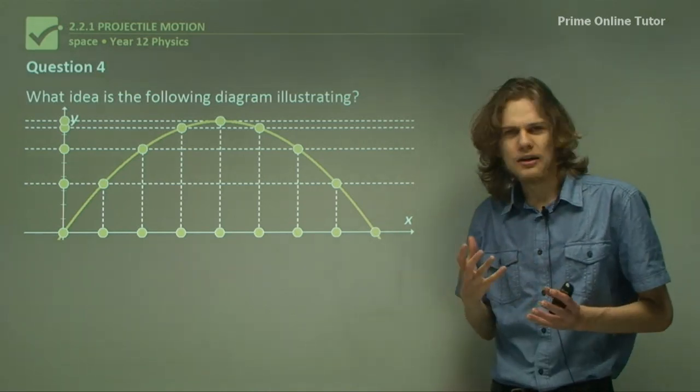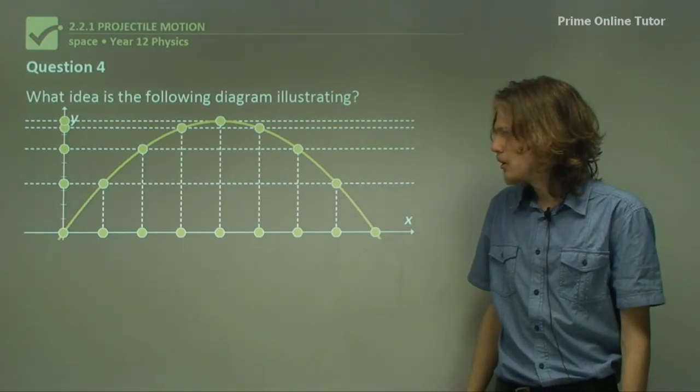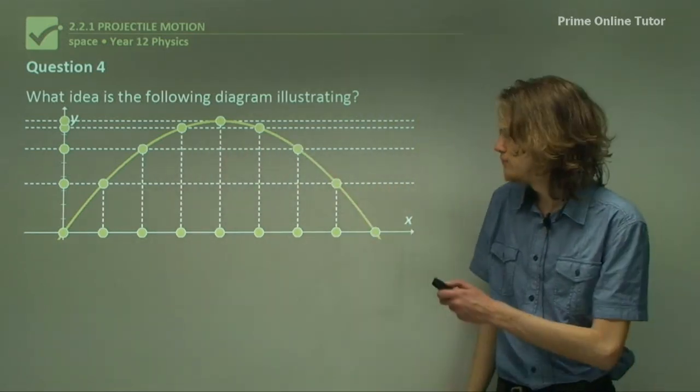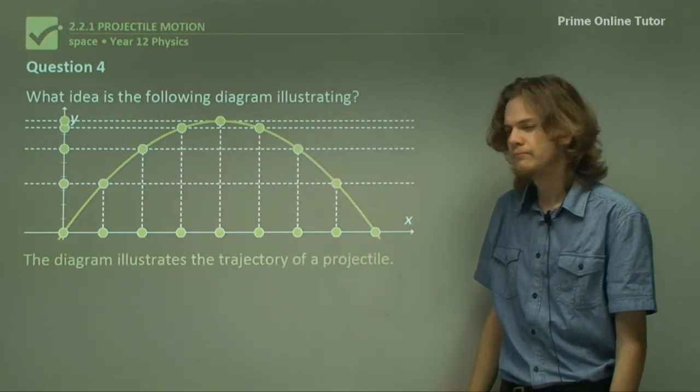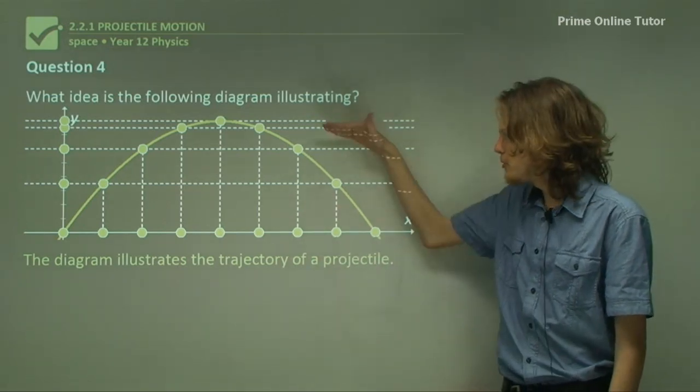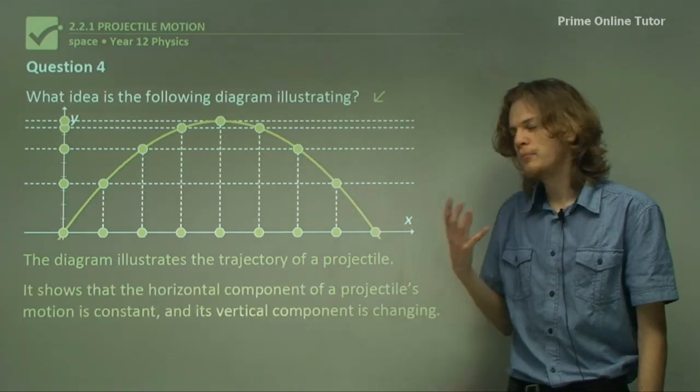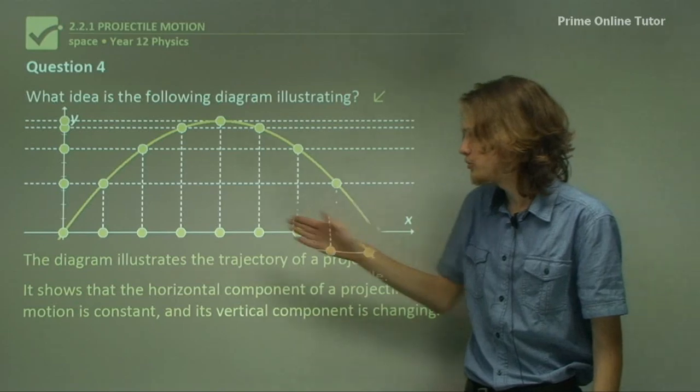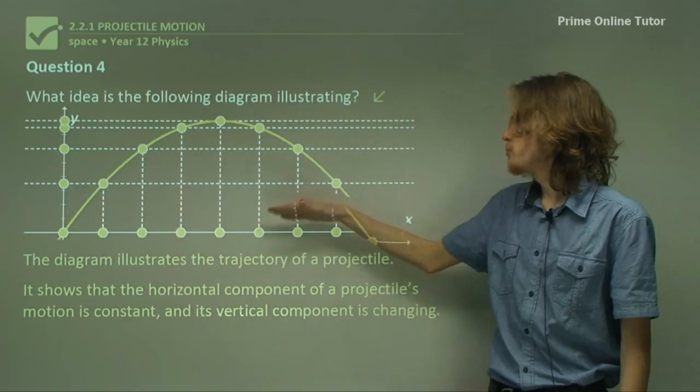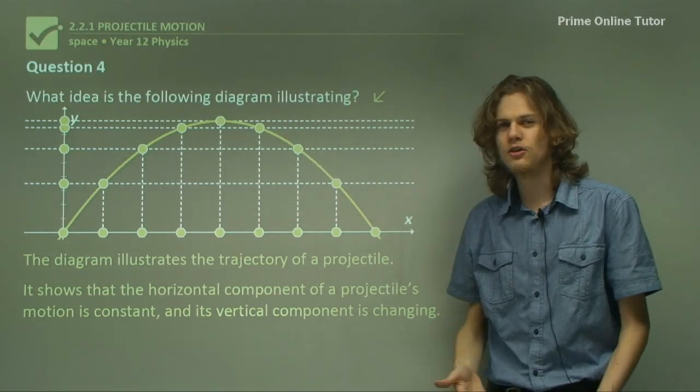So what could this be trying to illustrate, given that we've just been talking about trajectories and projectiles? It's probably safe to assume that this is indicating a trajectory. So what are these lines for? It's to do with the distances between them. It shows that the horizontal component of a projectile's motion will be constant, so these are all equidistant. And the vertical component will change, so the distance between these lines will change as the projectile's motion changes.